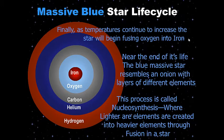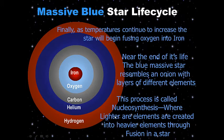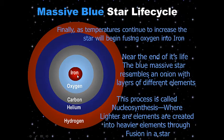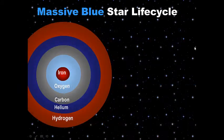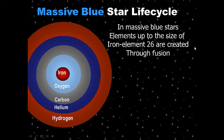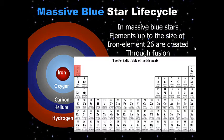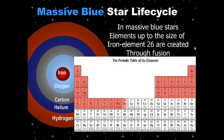This process is called nucleosynthesis. It means that lighter elements are created into heavier elements through fusion in a star — stars took hydrogen, the lightest element, and created all these heavier elements. In massive blue stars, elements up to the size of iron — element 26 on the periodic table — are created through fusion.